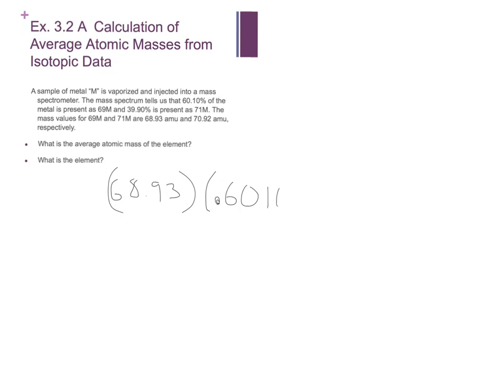60.10 as a decimal. And we're going to take the other isotope, 70.92. And we want 39% of that, so 0.0390. And that's going to give us the weight of each isotope. We're getting 41 AMUs from our mass there. We're getting 28.30 AMUs there.